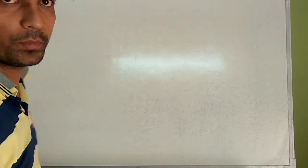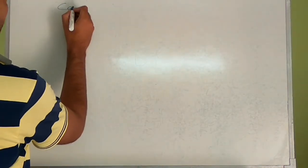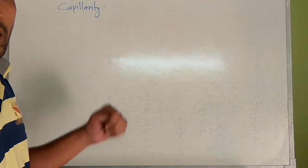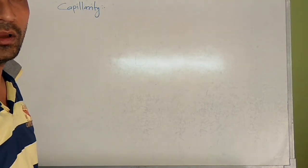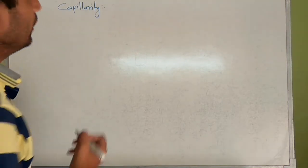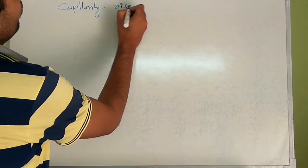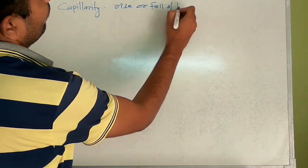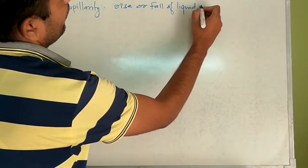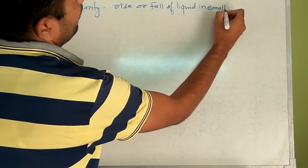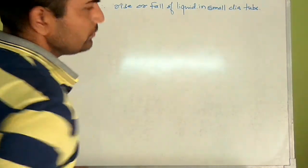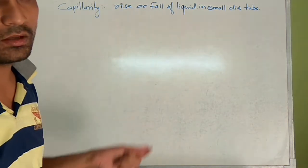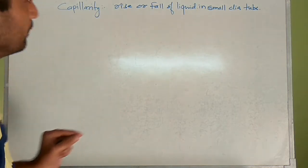Today we will start with the new topic: capillarity. Capillarity is nothing but the rise or fall of liquid or mercury in a small diameter tube. Rise refers to the example of liquid only, and fall refers to the example of mercury only.